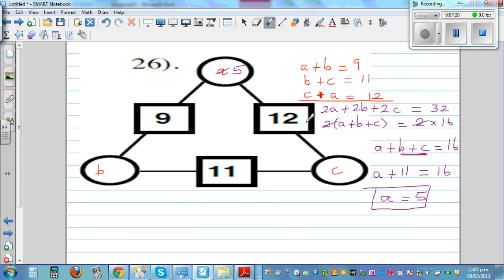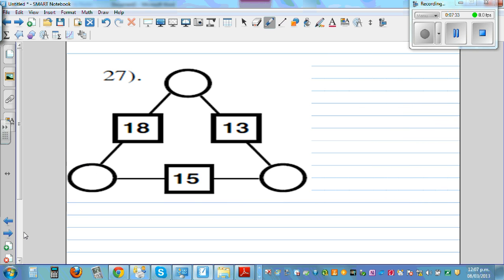So this has to be 7, and if this is 7, this has to be 4. So 5 plus 4 is 9, 4 plus 7 is 11, 7 plus 5 is 12. Do this question, take this down and try to challenge yourself doing this. And there is one more question.